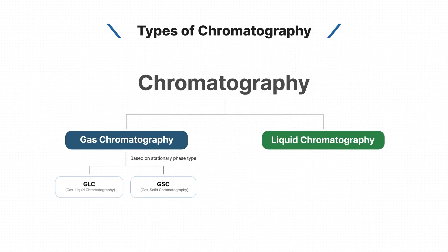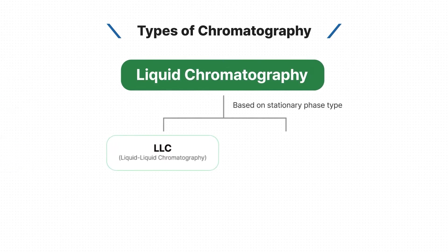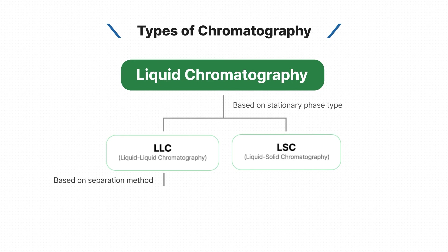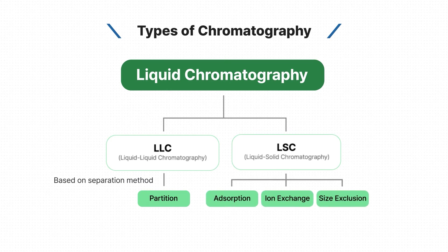Moving to liquid chromatography, LC can be categorized as LLC and LSC. LLC, which stands for liquid liquid chromatography, uses the partition chromatography method. LSC can be classified into three types: adsorption, ion exchange, and size exclusion chromatography.